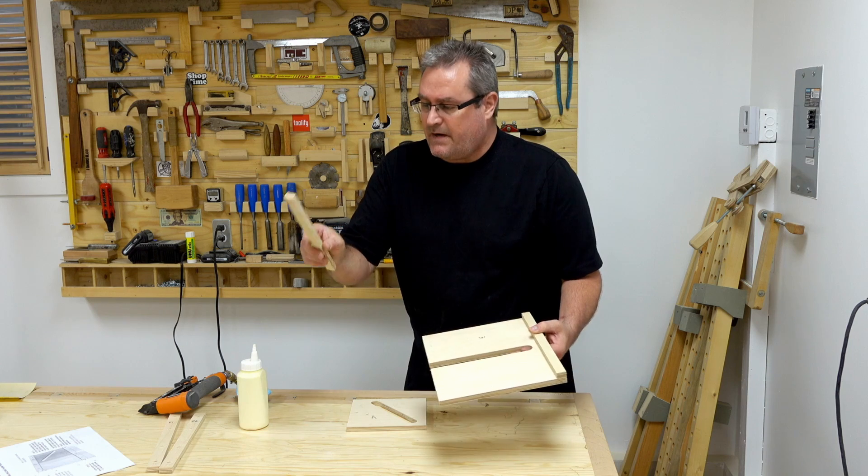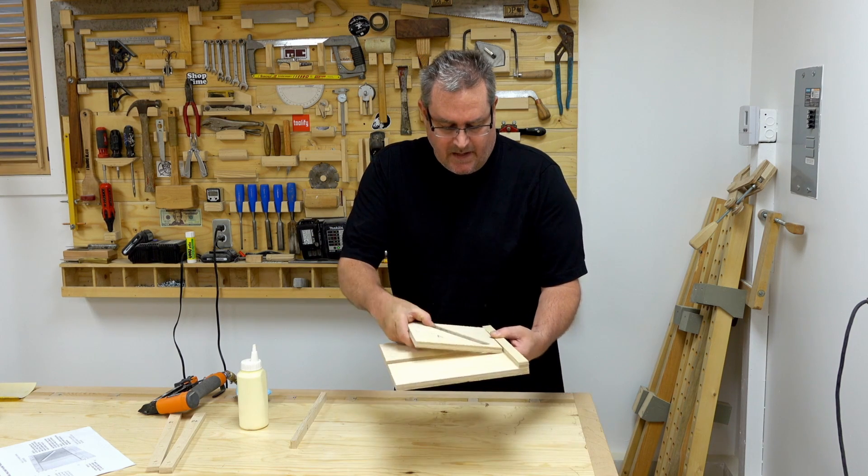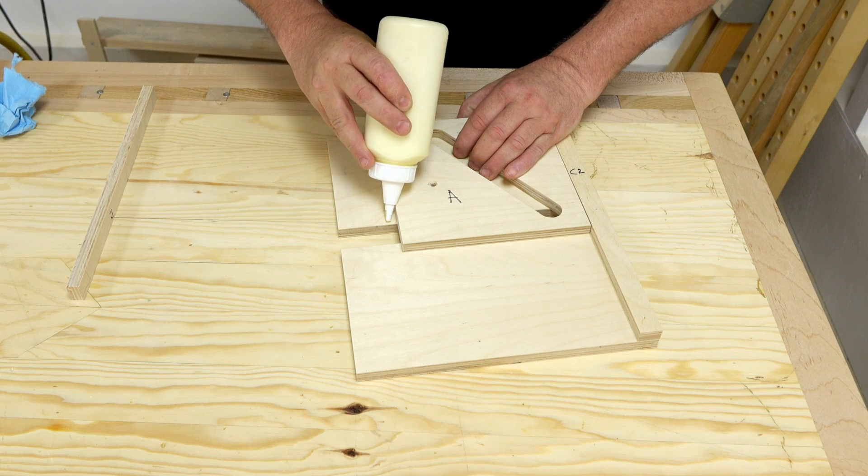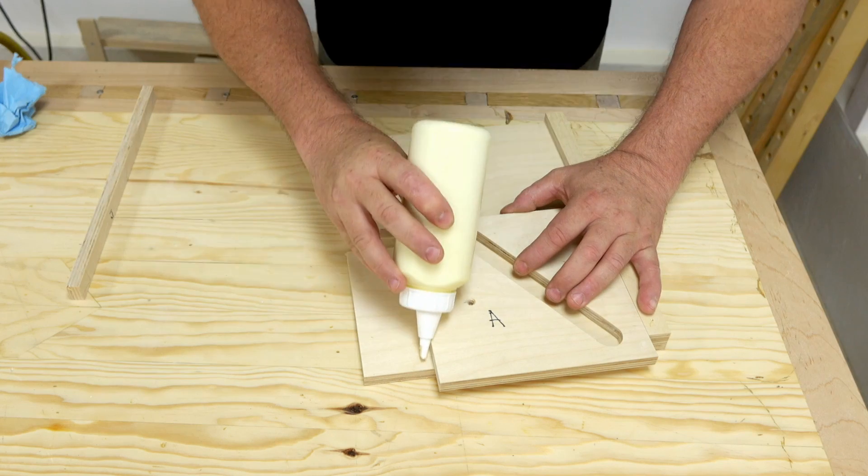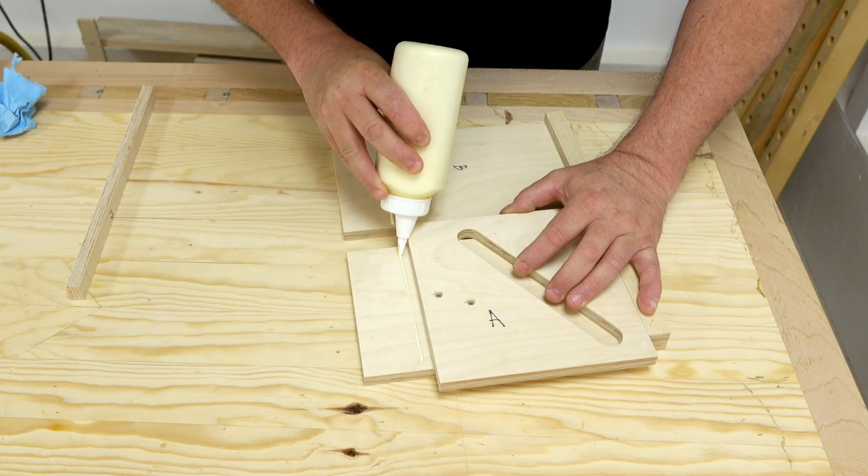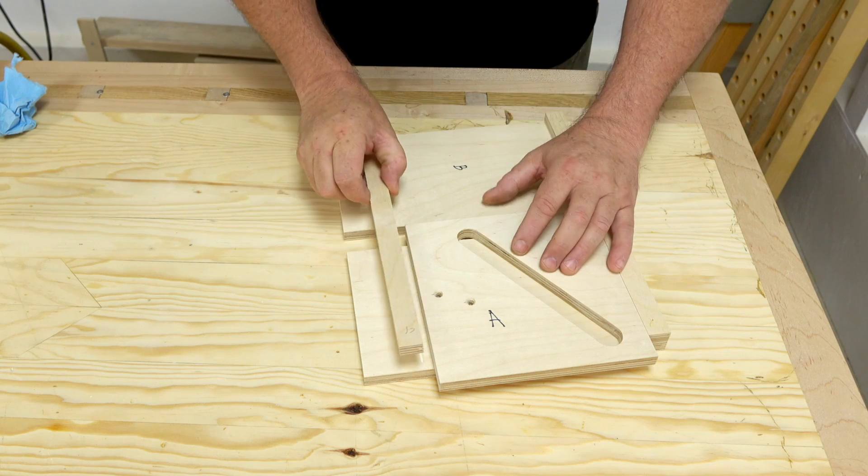Next I need to fasten part C2 at the bottom. I'm going to use part A as a spacer to locate the part properly while I glue and pin it in place. Now I got C1 and C2 mixed up here, but it really doesn't matter—both are the same part. The important thing is to put the sanded part inside against part A.